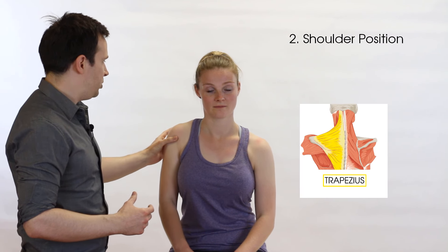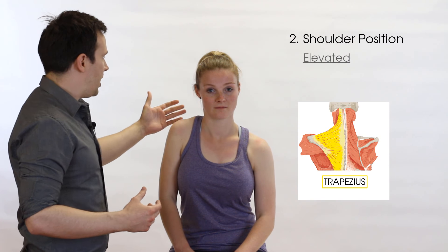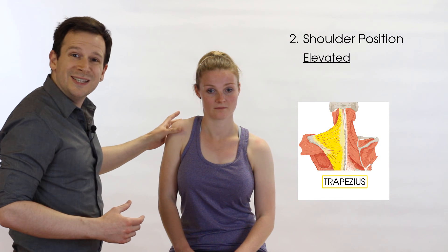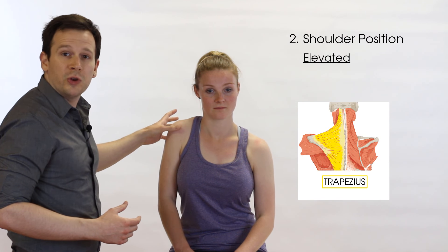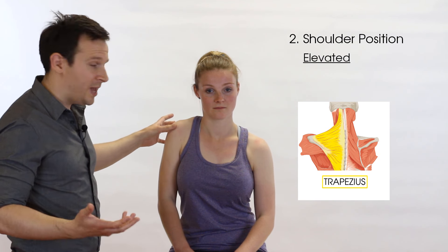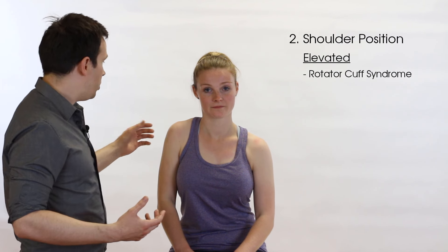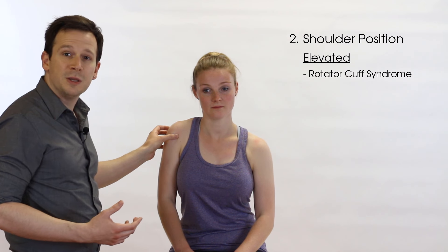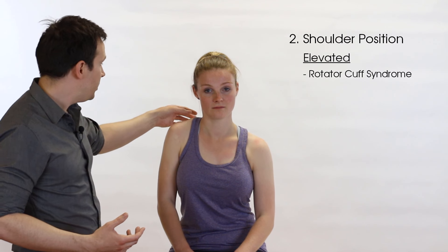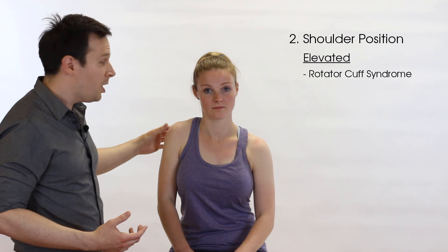If we've got an elevated trapezius on the affected side, there are a few situations where this might occur. One is with a rotator cuff problem, where there's not enough power and stability, and the upper trapezius is trying to join in.